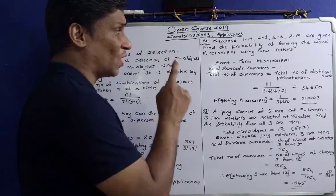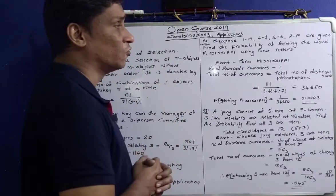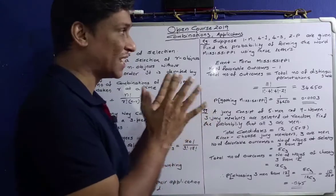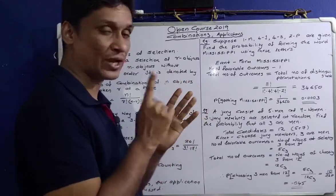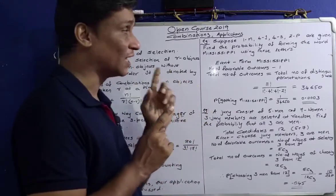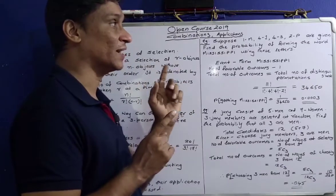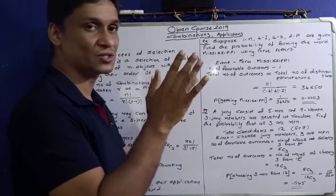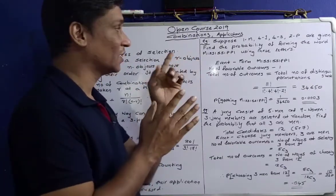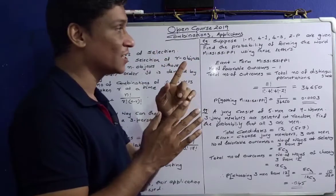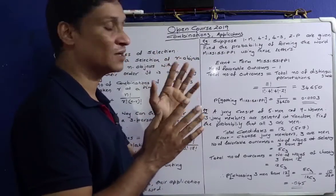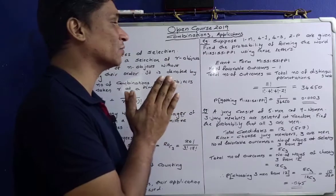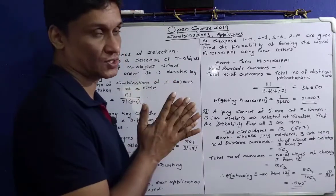Suppose we have 1 M, 4 I's, 4 S's, and 2 P's. Find the probability of forming the word Mississippi using these letters.